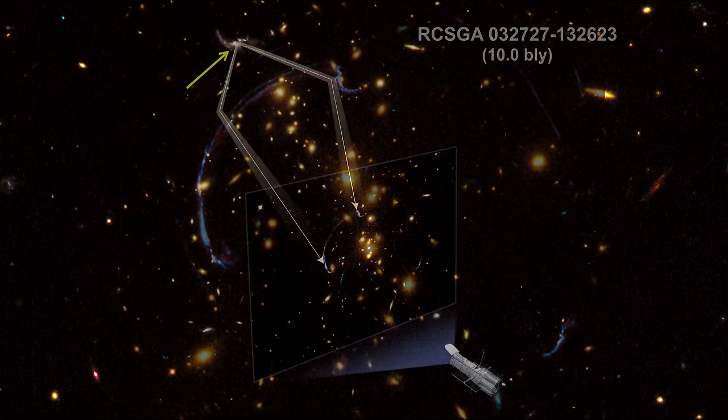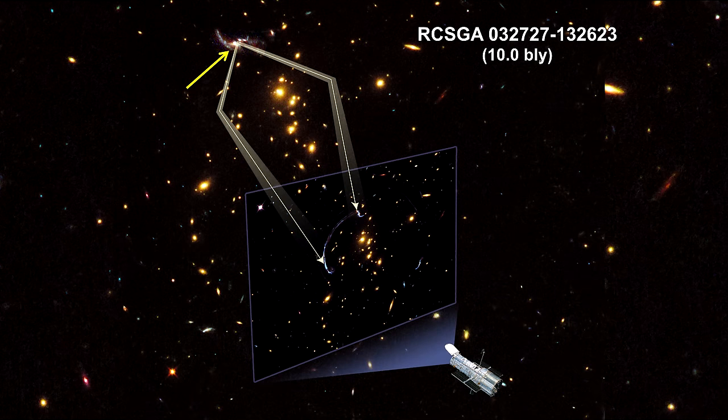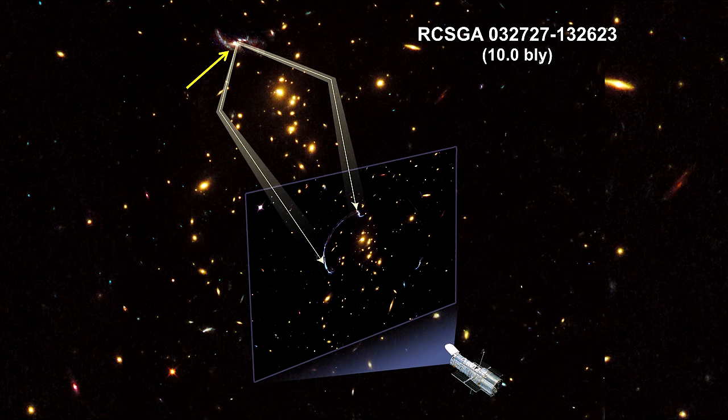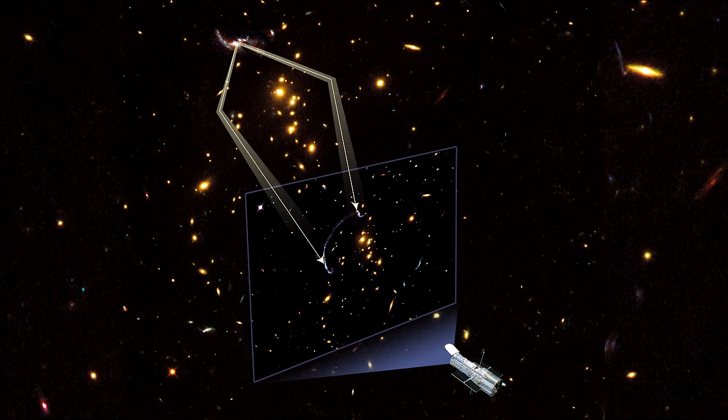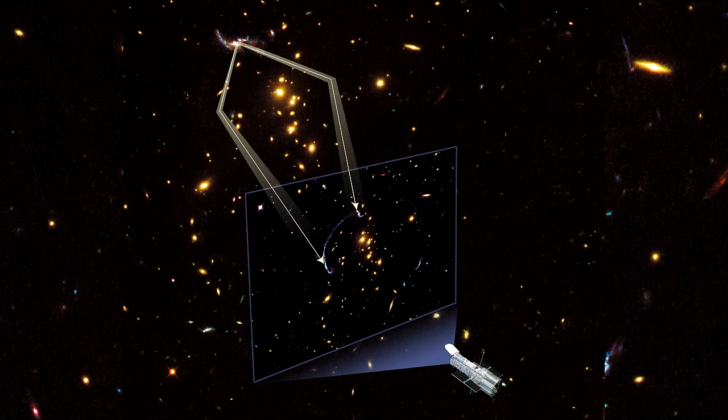In this image, the light from a distant galaxy, nearly 10 billion light-years away, has been warped into a nearly 90 degree arc of light in the galaxy cluster. The galaxy cluster that is bending the light lies 5 billion light-years away.